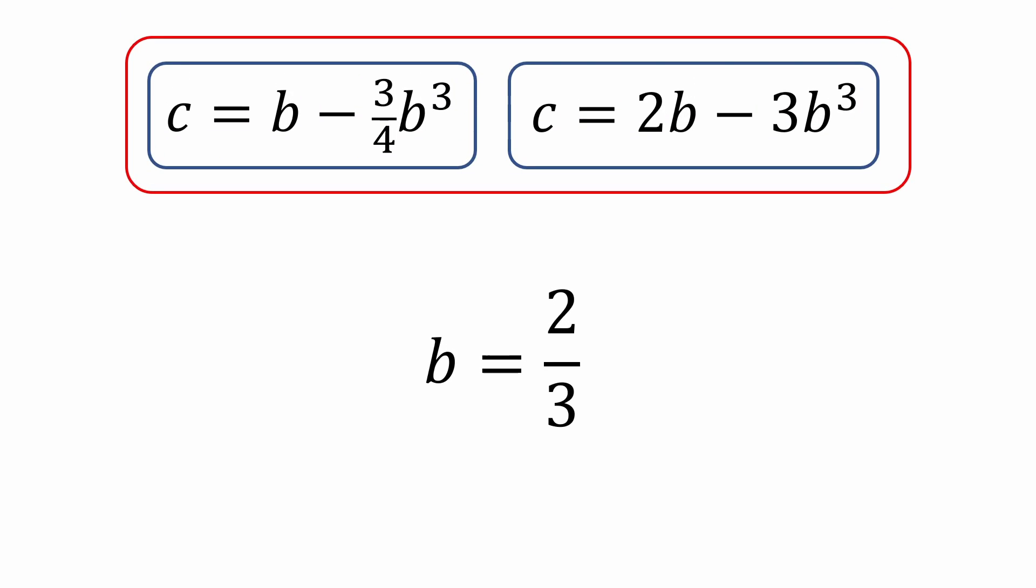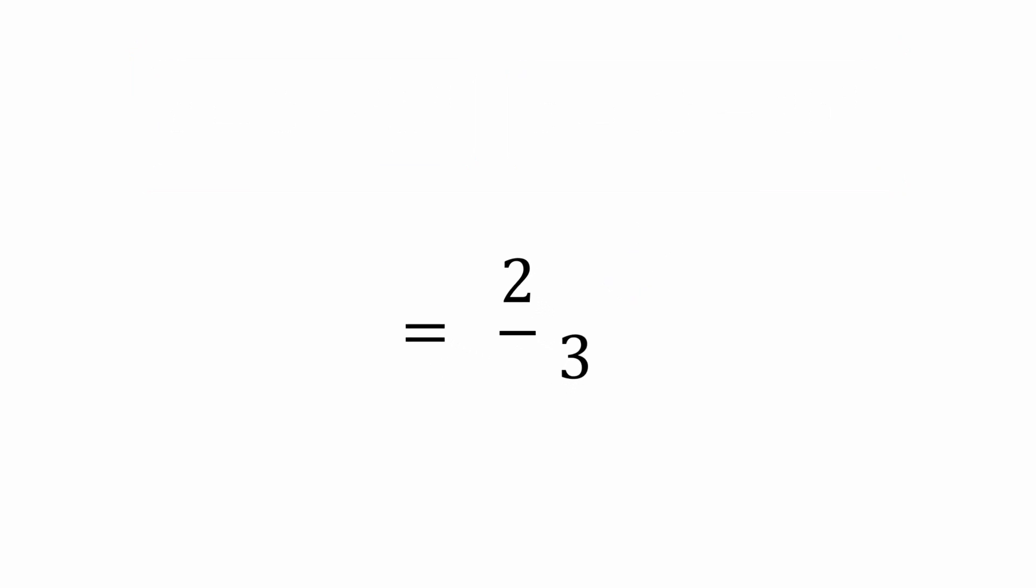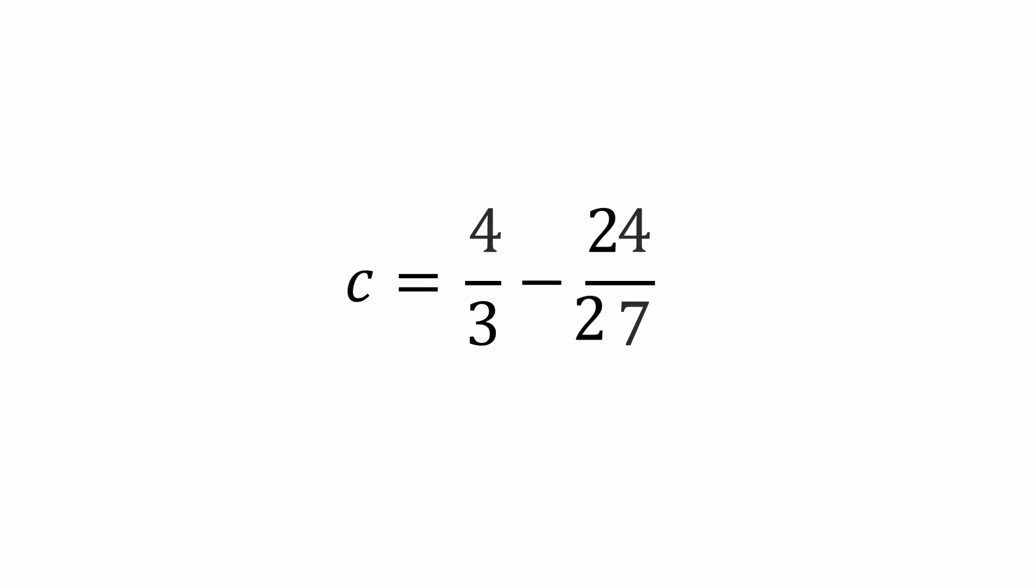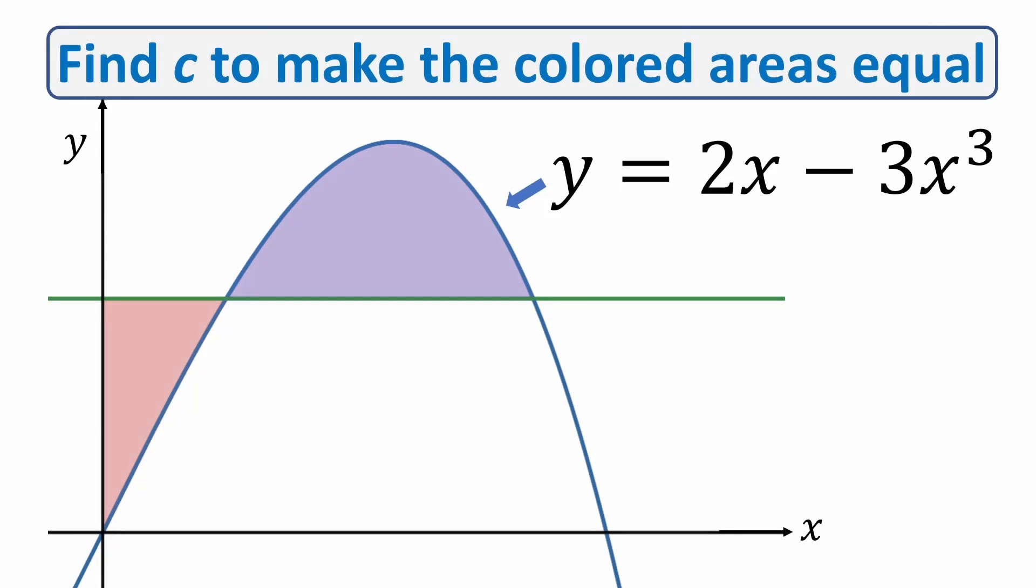Now we'll plug in b equals 2 thirds into either equation above to calculate c. I'll use the one on the right to get the following equation. This simplifies to 4 thirds minus 24 27ths. And after combining and then reducing the fractions, you will get c equals 4 ninths. So that means that the line y equals 4 ninths will perfectly slice the graph so that the shaded regions are equal.